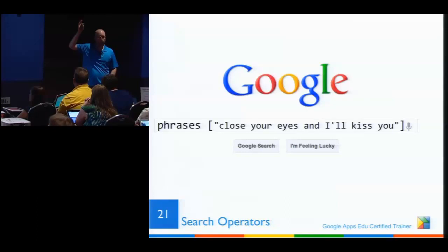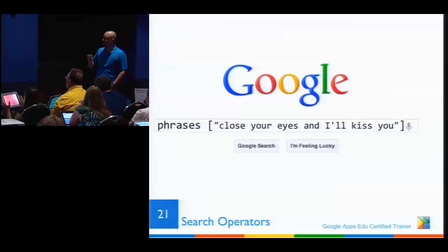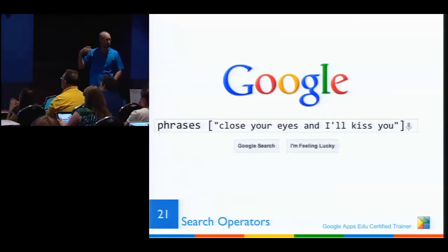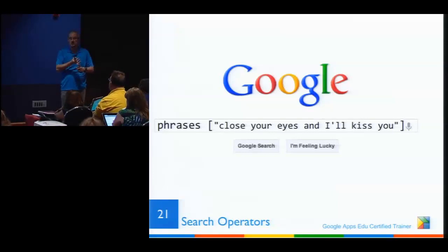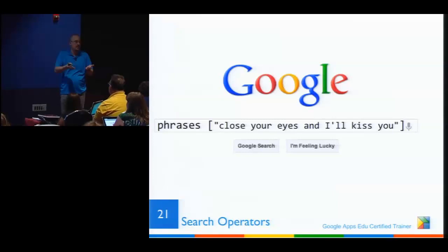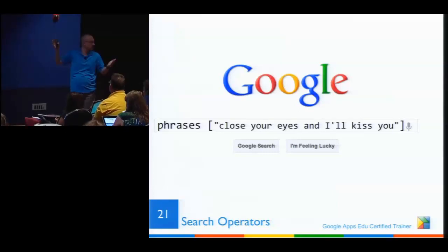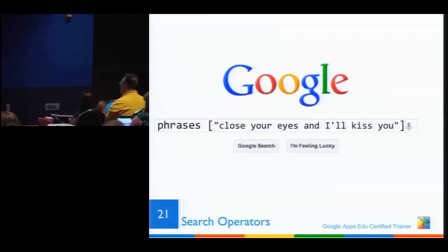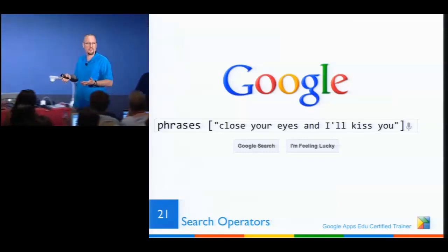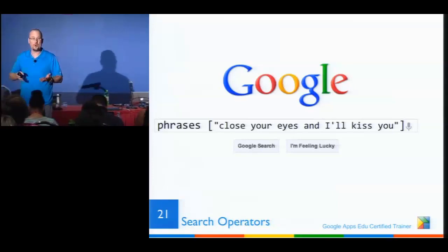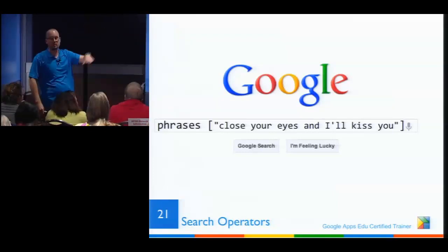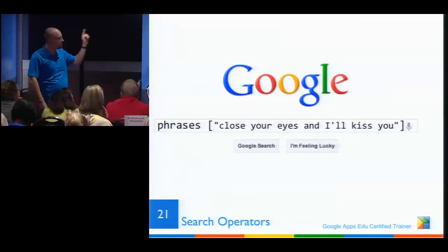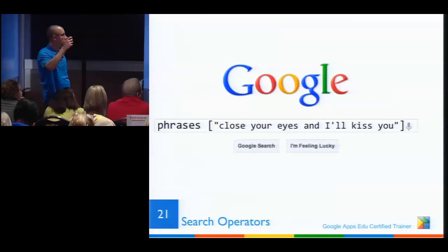Phrase searching: if you search 'population statistics,' Google shows sites that have 'population' and 'statistics' but they don't have to be next to each other. If you put it in double quotes, it searches for those words in that exact order. This is also how you catch plagiarism: when you get a paper and it doesn't sound like the student's tone, you copy that paragraph, paste it in double quotes, and it'll show you the Wikipedia article it came from.